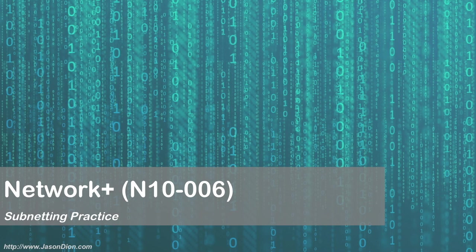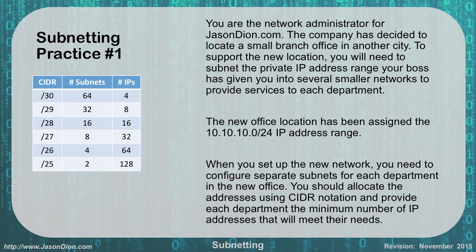In this lesson we're going to do three sample subnetting problems. When we get to that portion you're going to want to pause the video and try them on your own before revealing the answers. For the first problem you're a network administrator and the company has decided to locate a small branch office in another city. To support the new location you need to subnet the private IP address range your boss gave you into several smaller networks to provide services to each department.